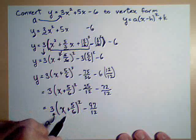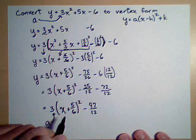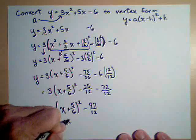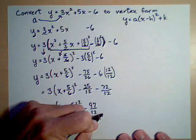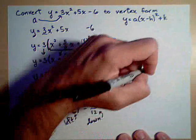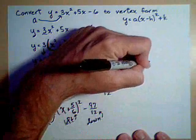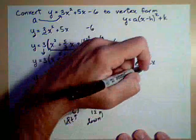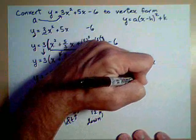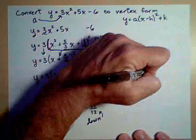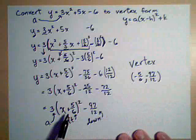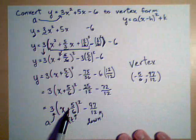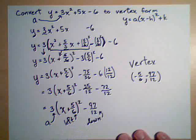What's useful about the vertex form is we can look at this as the graph of y equals x squared going left by 5 sixths and going down by 97 twelfths. So in identifying the vertex, it's just a shift left of 5 sixths. So the x coordinate of our vertex would be negative 5 sixths and a shift down of 97 twelfths. So negative 97 twelfths. Notice when we pull out the vertex, we change the sign on the inside but not on the outside. So when you're pulling the vertex out of your vertex form, remember, change the sign on the x coordinate but not the y coordinate.